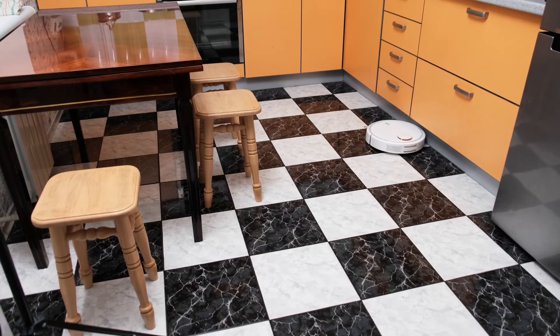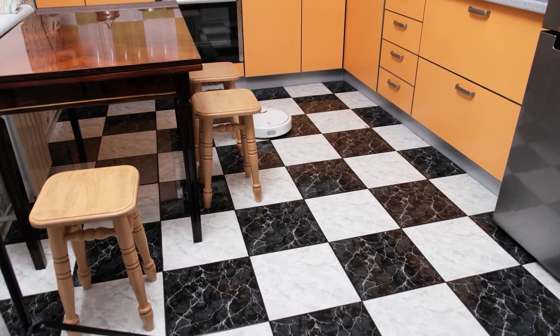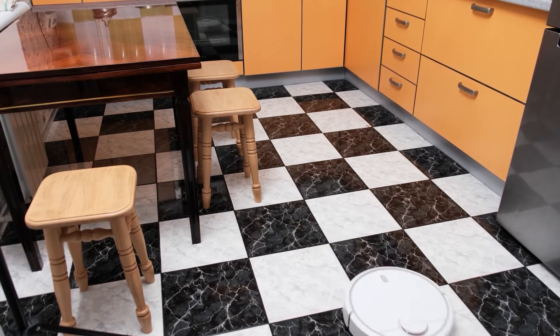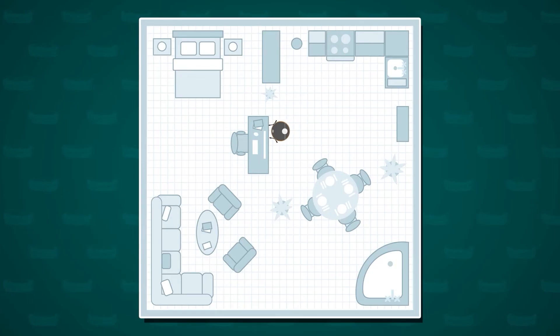Some advanced robot vacuums can even create a map of your house. They use this map to clean more efficiently, ensuring they don't miss a spot. Leo can view this map on an app, watching as the robot charts its course.